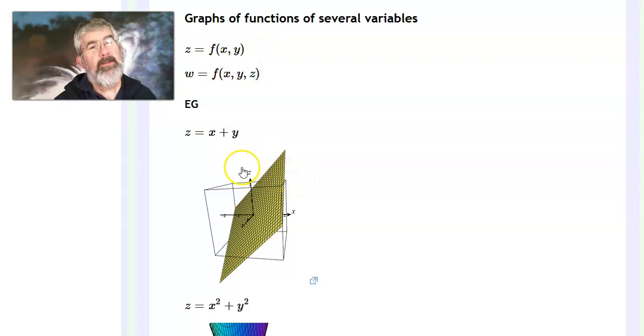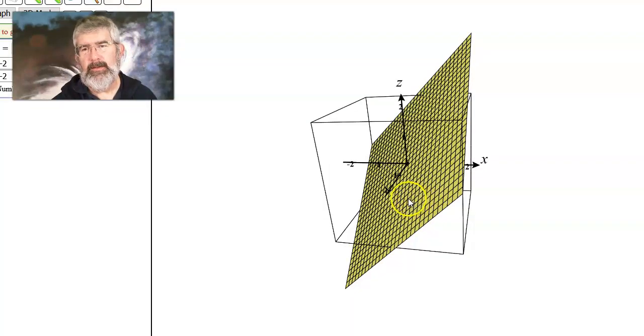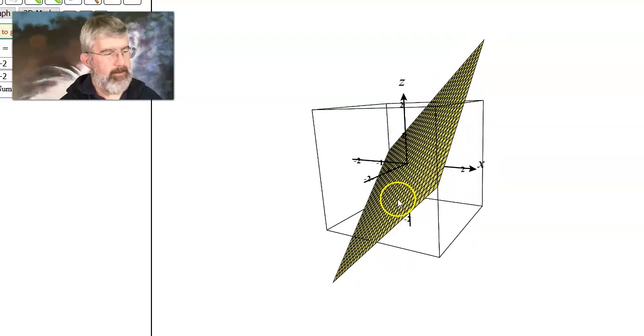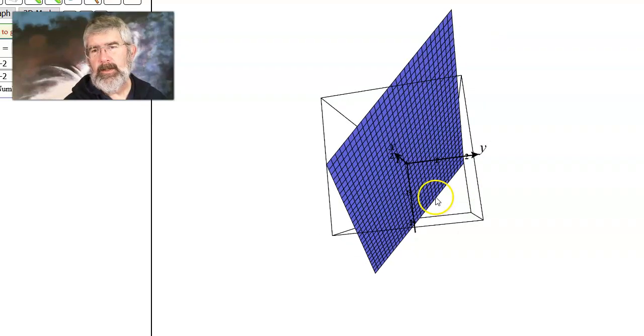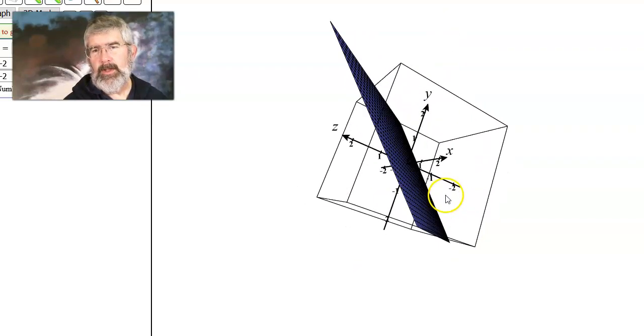So we've seen some of this already because we have seen, for instance, an equation like this, z equals x plus y. This is linear in x, y, and z. We've seen this is the graph of a plane. We could find the normal vector for that plane if we wanted to. But here's the graph, and I can move it around and look at it here.